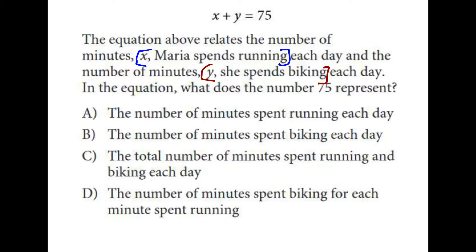In the equation, what does the number 75 represent? Well, a and b we can cross out because those are just the values for x and y. And d here is a little bit unnecessarily complicated. What we're actually looking at is the sum of these two things put together or the total. C is the best choice.